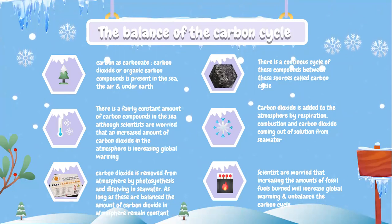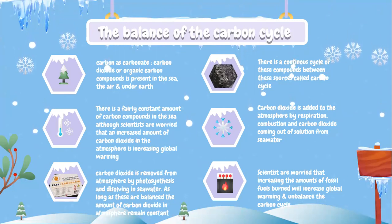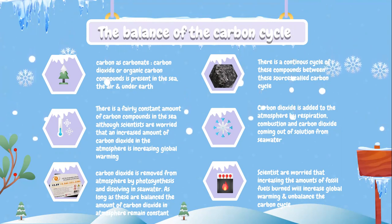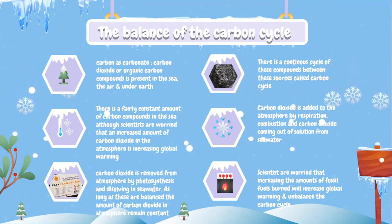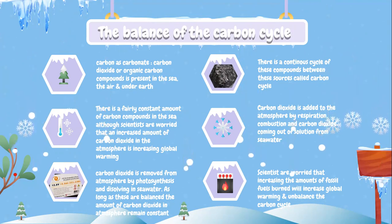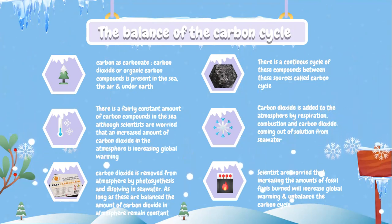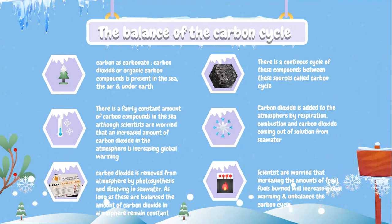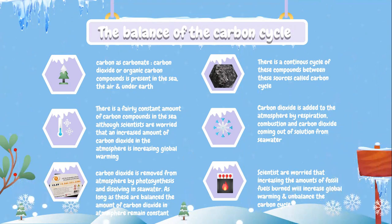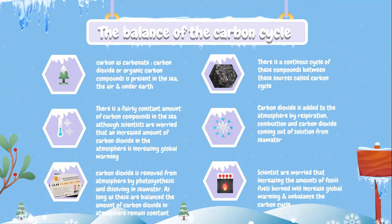Let's look into the balance of the carbon cycle. Carbon, as carbonate, carbon dioxide, or organic carbon compounds, is present in the sea, the air, and under the earth. There is a continuous cycle of these compounds between these sources, called the carbon cycle.